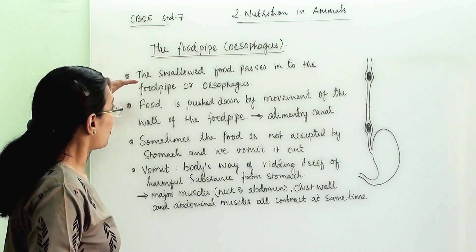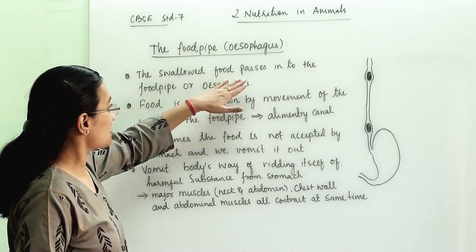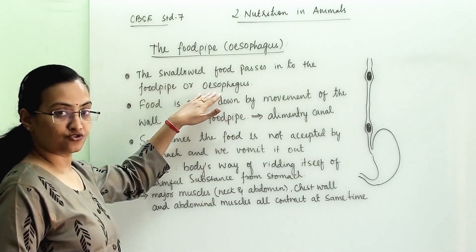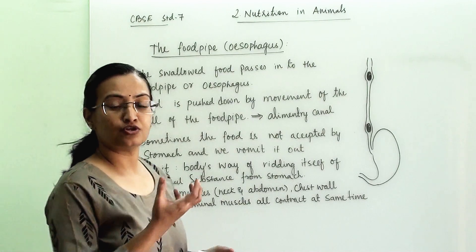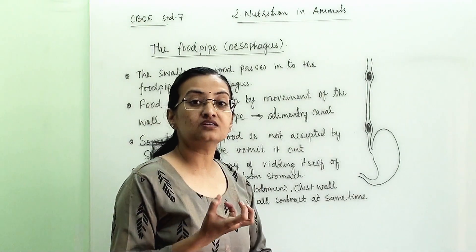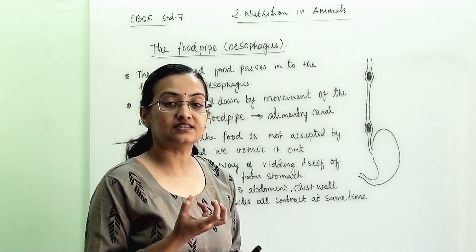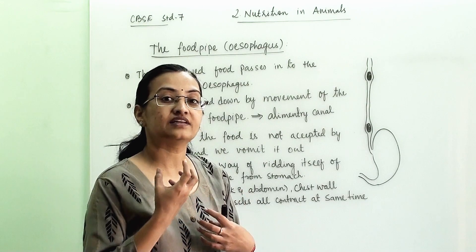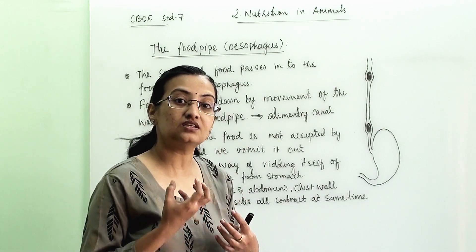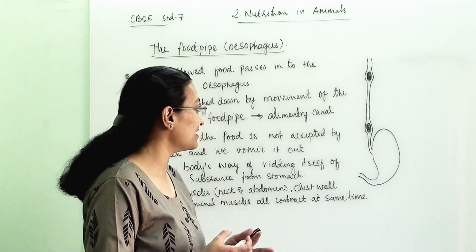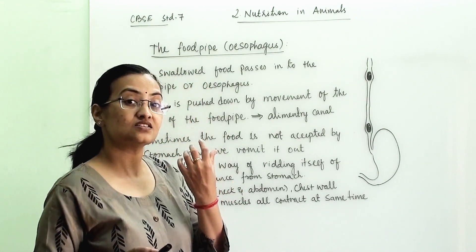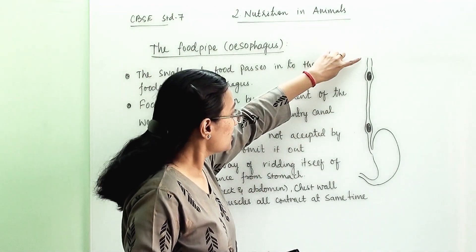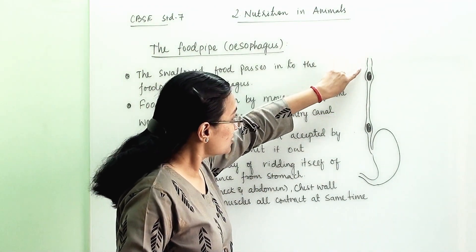The swallowed food passes into the food pipe or esophagus. We have learned that first we chew the food particles and food substance in our mouth. The saliva gets mixed with the food and then we slowly swallow the food.